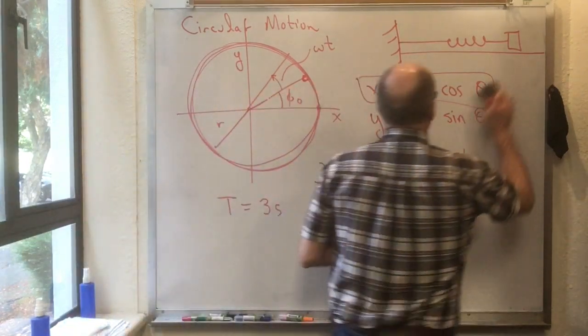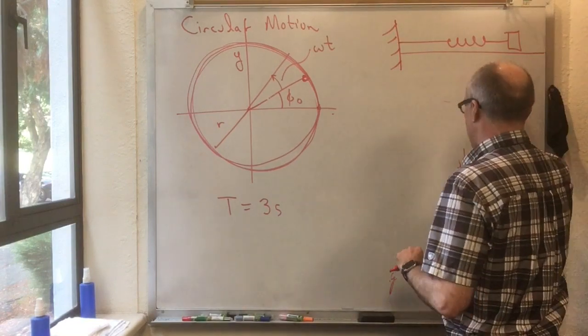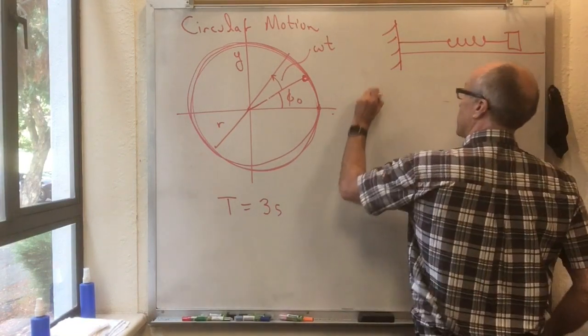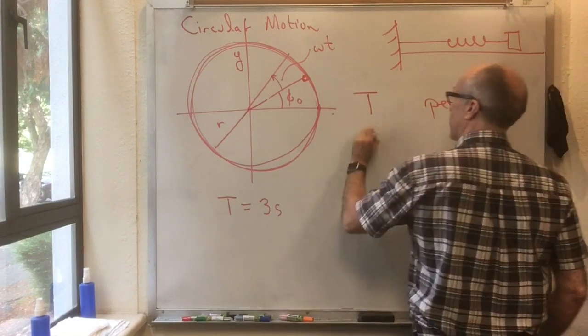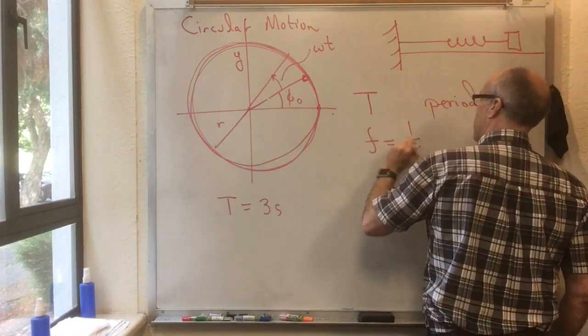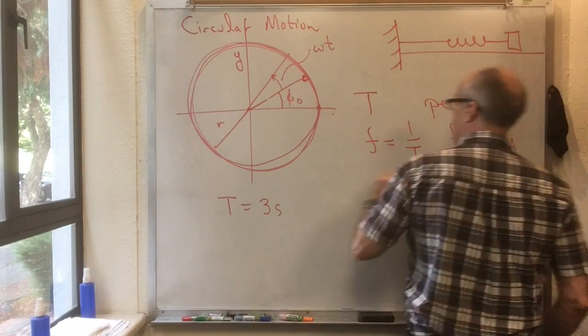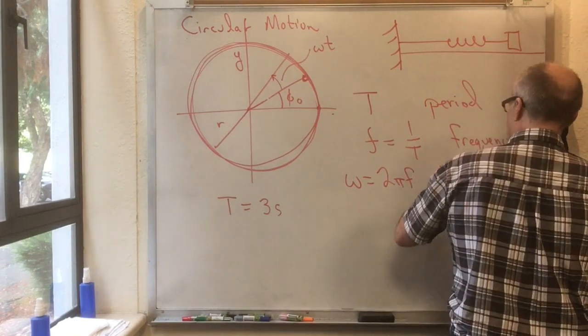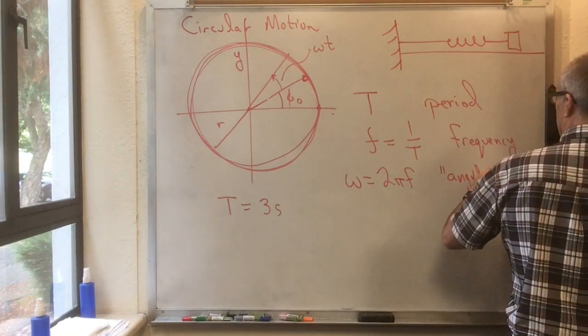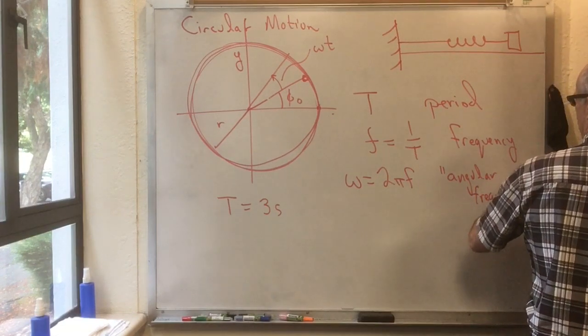So let me summarize the terminology. The terminology we've introduced so far we have t, the period. We have f equals 1 over t, which is the frequency. We have omega equals 2 pi f, which is the angular frequency or the angular velocity.